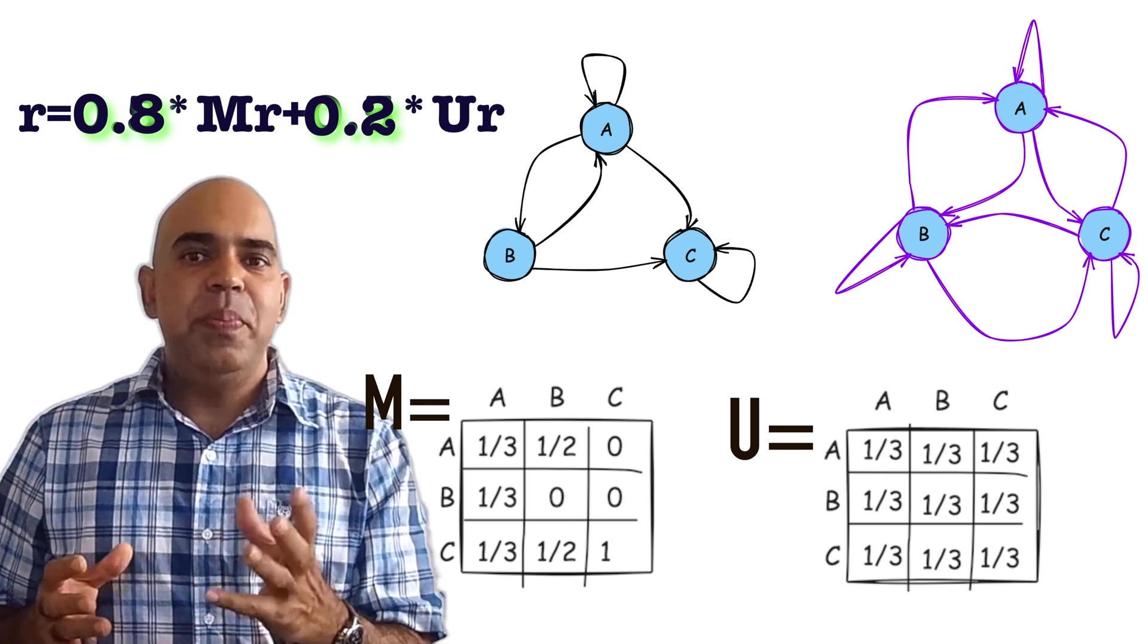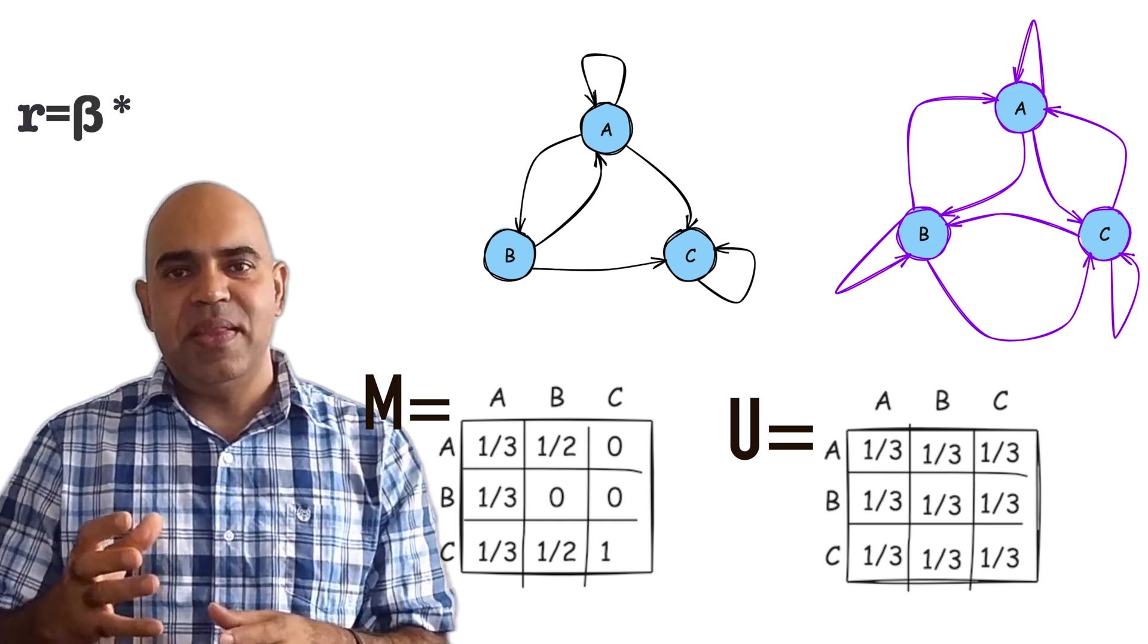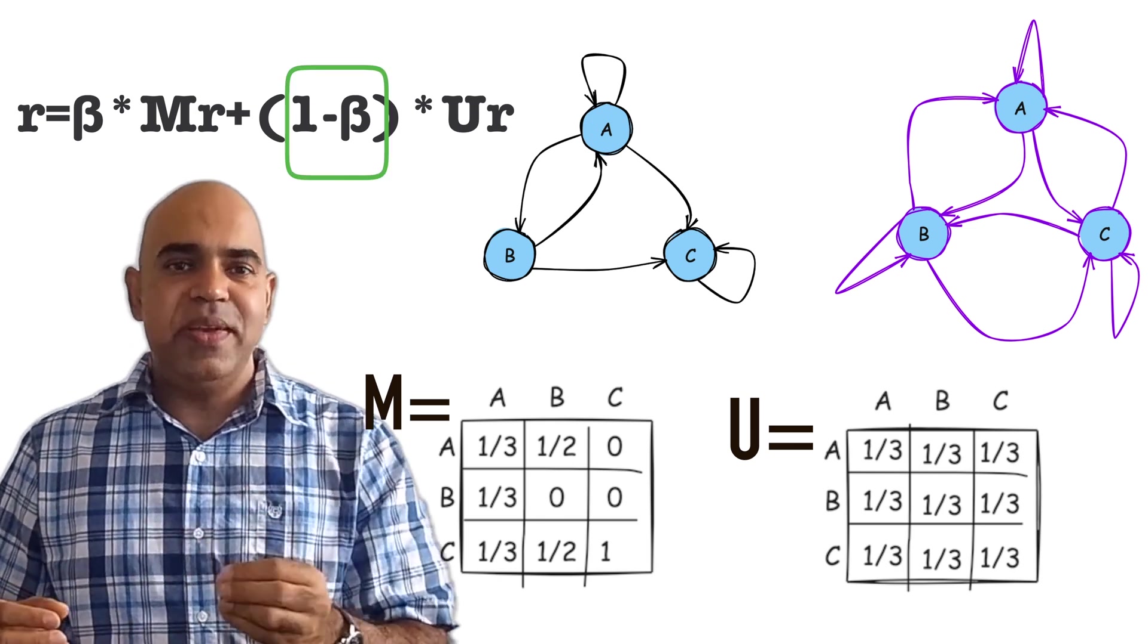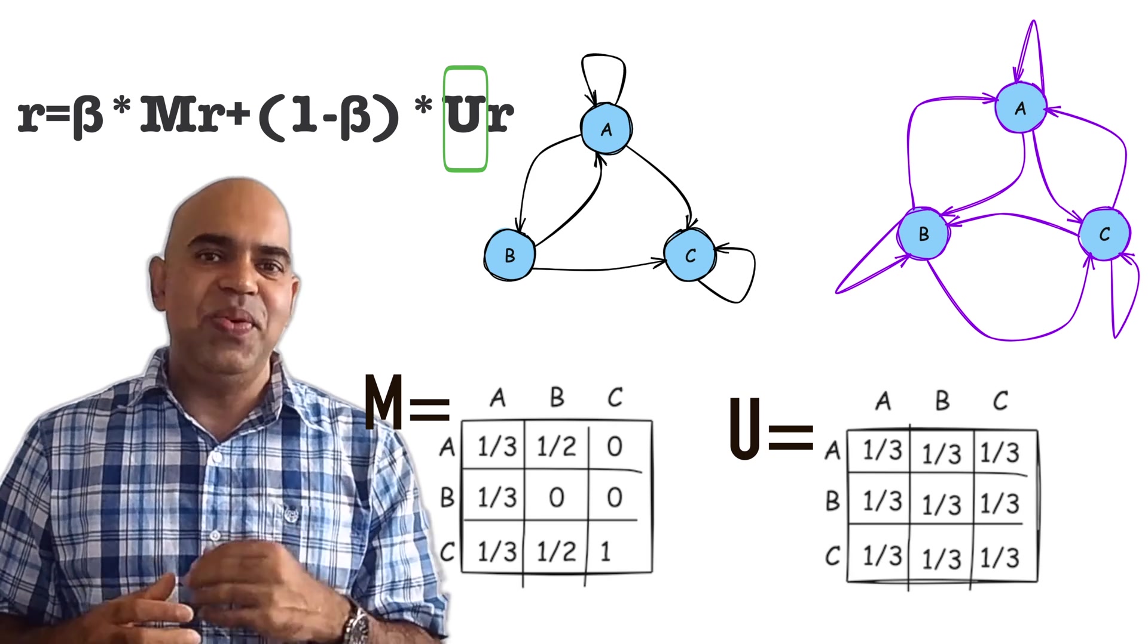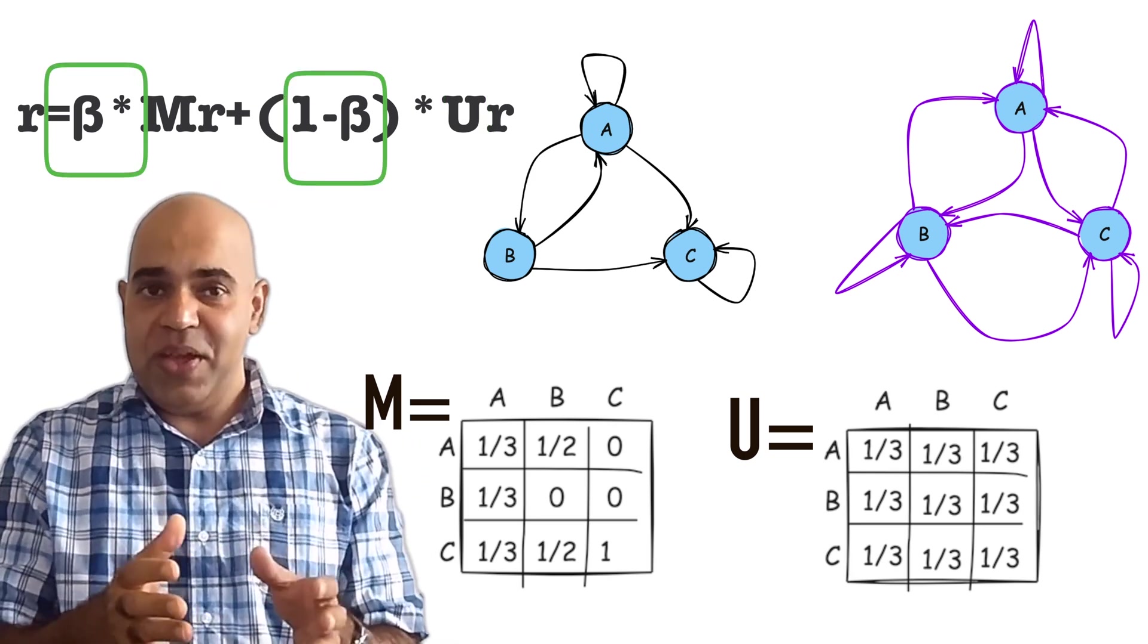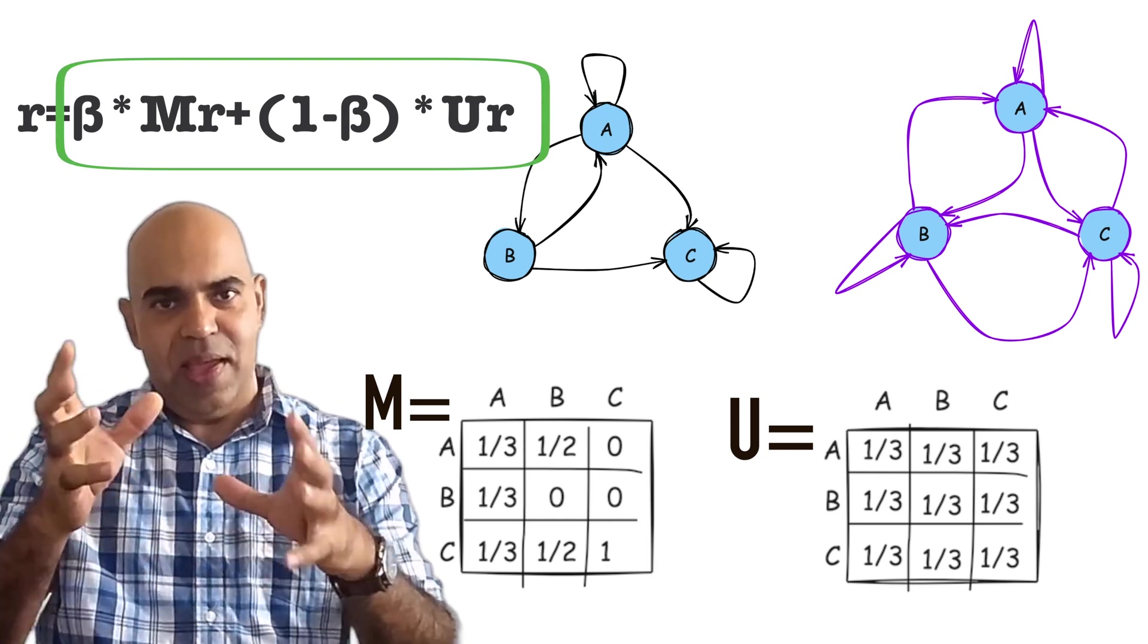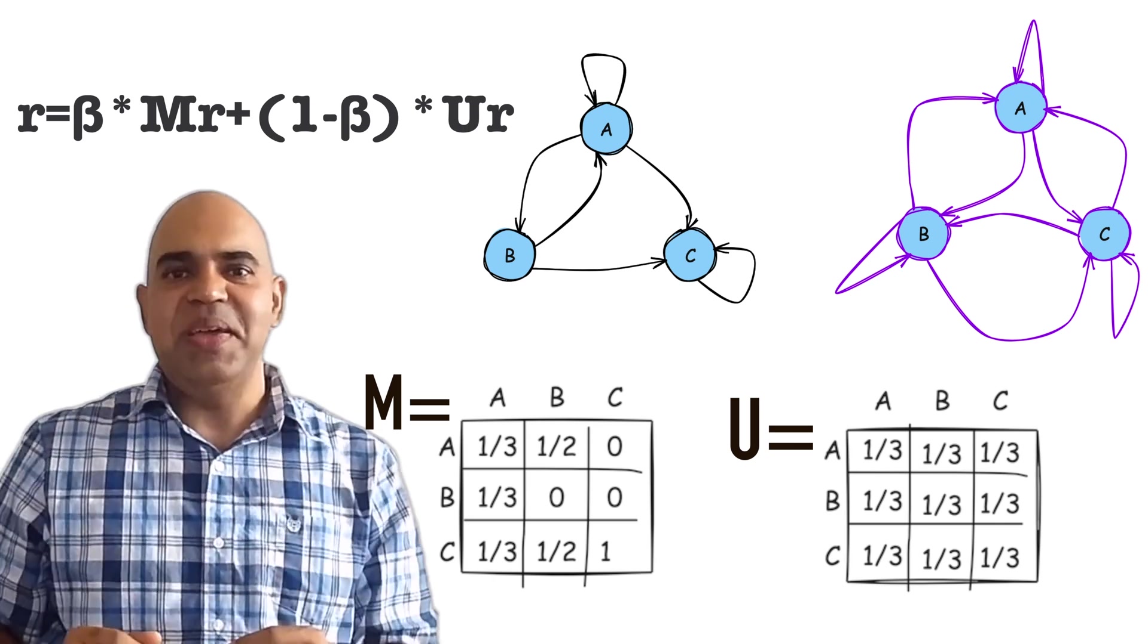What Google does is it introduces a parameter, say beta, where beta varies between 0 and 1. Beta is the probability that the random surfer uses an actual hyperlink and 1 minus beta is the probability that the random surfer teleports to any website. With the inclusion of this beta probability, the entire right side results in a column vector that sums up to 1.0.